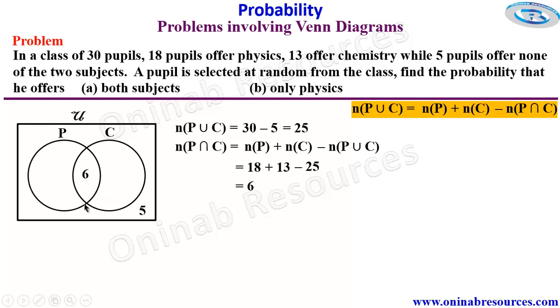And we have established initially that the whole of this circle represents the 18 pupils offering physics. So to get those offering physics only without chemistry, we are going to have 18 minus 6, which gives 12.